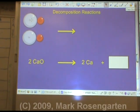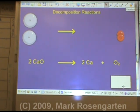In a decomposition reaction, the compound 2CaO decomposes. Oxygen, being diatomic when it's by itself, forms a molecule of O2. And the two calciums remain separate.